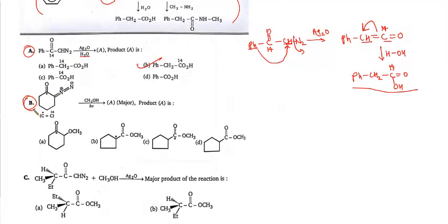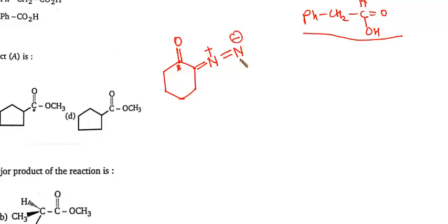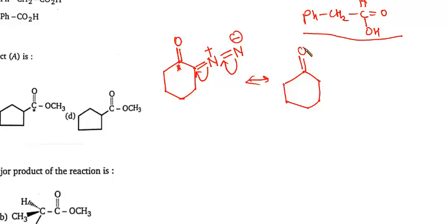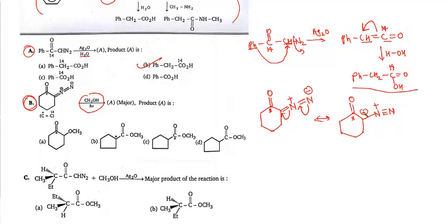Now question B: what happens when CS₂OCS₃ reacts? Draw the mechanism: add the keto group here, star is marked here, double bond N⁺ double bond N⁻. Apply resonance — this goes here, that goes here — and the resonating structure forms: double bond O, star here, and minus N⁺ triple bond N. The lone pair (minus) goes here, and the adjacent bond goes this way.